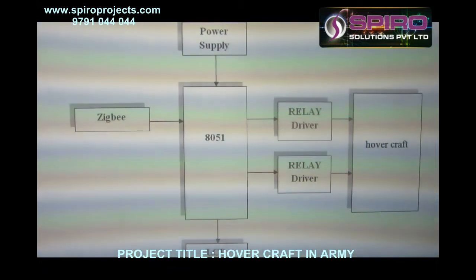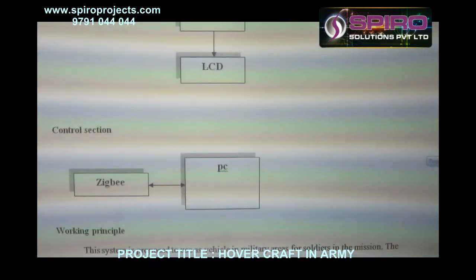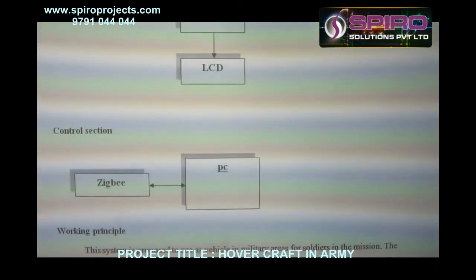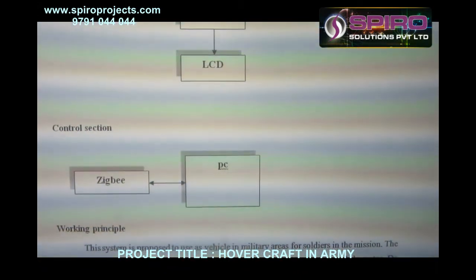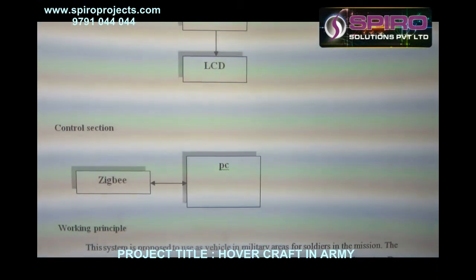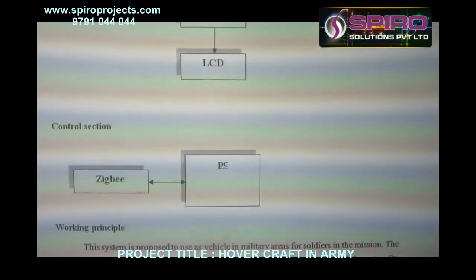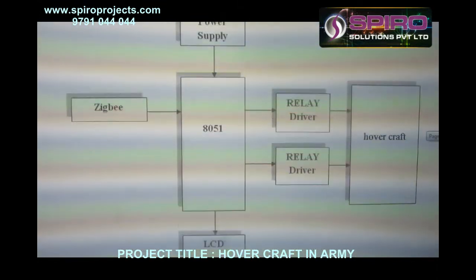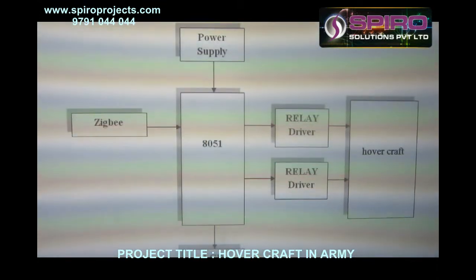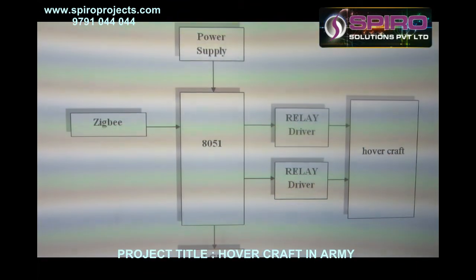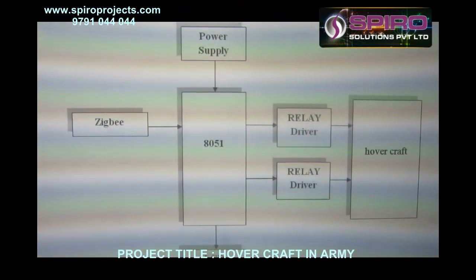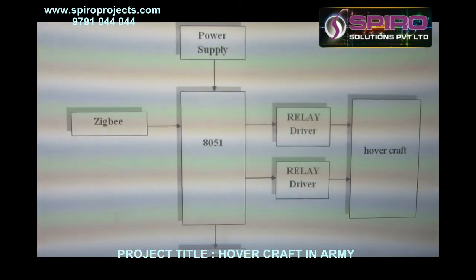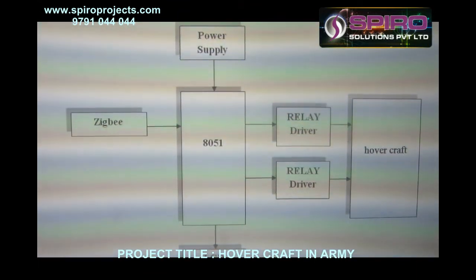Here we have another section — the control section. In this control section, we connect the Zigbee with a PC. We give the input in the PC, and that information is transmitted wirelessly with the help of Zigbee to the vehicle section. The vehicle will move on both land surface as well as the water surface.